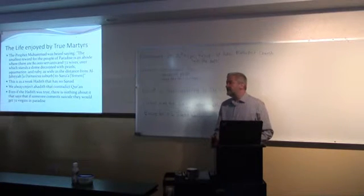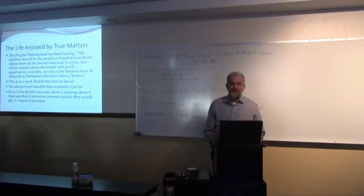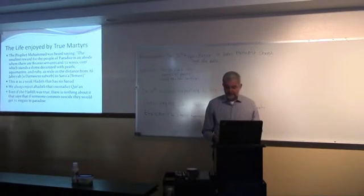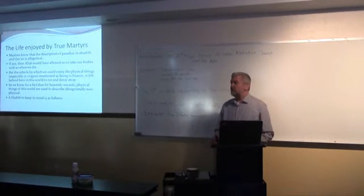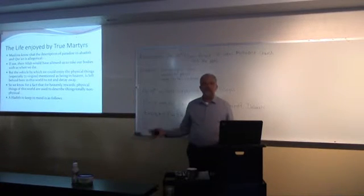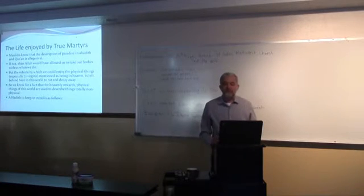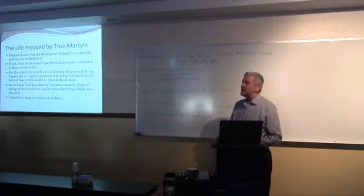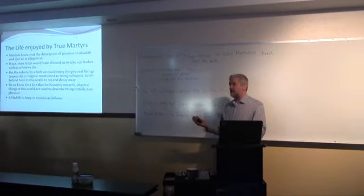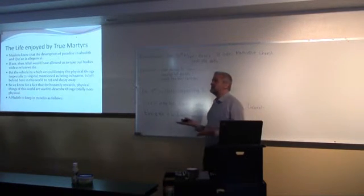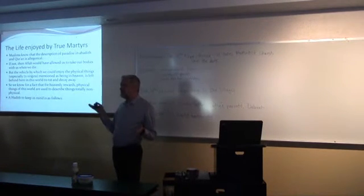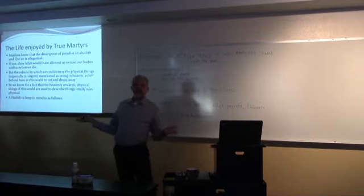The hadith we find is in Sunan Al-Tirmidhi, hadith 2562. The Prophet Muhammad was heard saying: 'The smallest reward for the people of Paradise is an abode where there are 80,000 servants and 72 wives, over which stands a dome decorated with pearls, aquamarine, and ruby, as wide as the distance from Al-Jabiyah, a Damascus suburb, to Sana'a, which is Yemen.' This is a weak hadith that has no sanad, and a sanad is the chain of transmission. When we have a healthy hadith, we have a chain of transmission that goes from the last person all the way back to the first person that reported it.